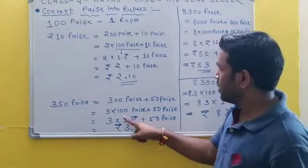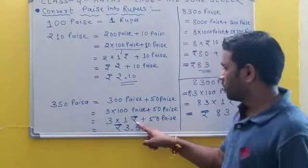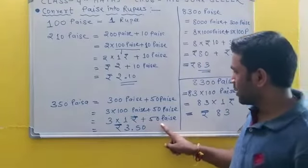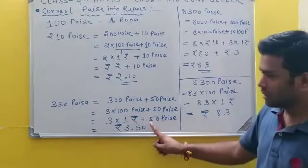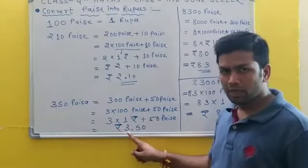So this is 1 Rupee. So this is 3 into 1 Rupee plus 50 Paise. So this is 3 into 1, equals 3, plus 50 Paise. This is 3.50.